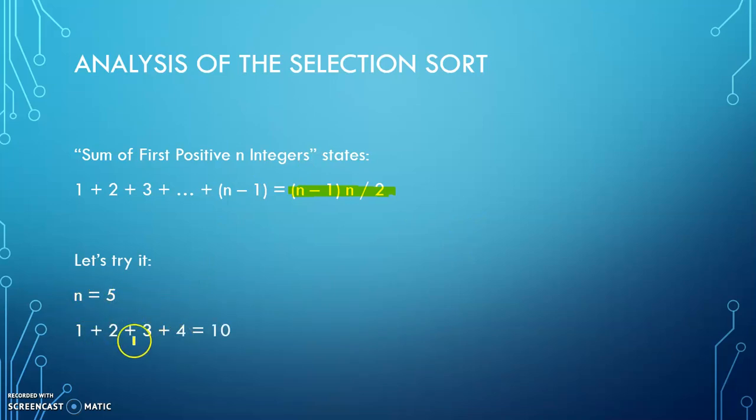So let's say n equals 5. We would say, now again, we're going up to n minus 1. So we're saying 1 plus 2 plus 3 plus 4, that's the n minus, n minus 1 rather, is equal to 10. Let's test it and see if this equals 10.